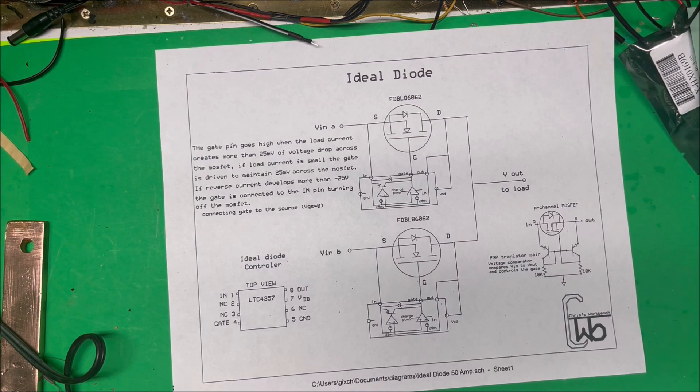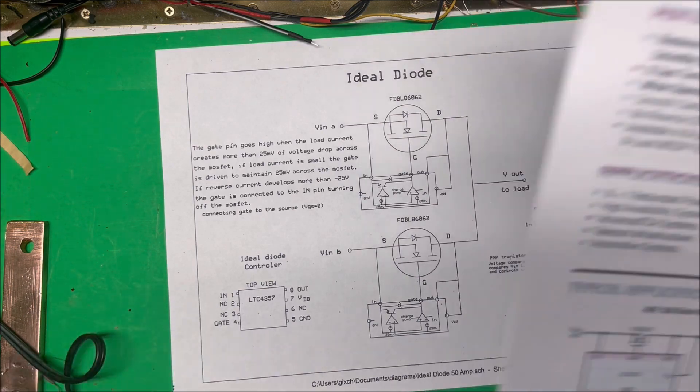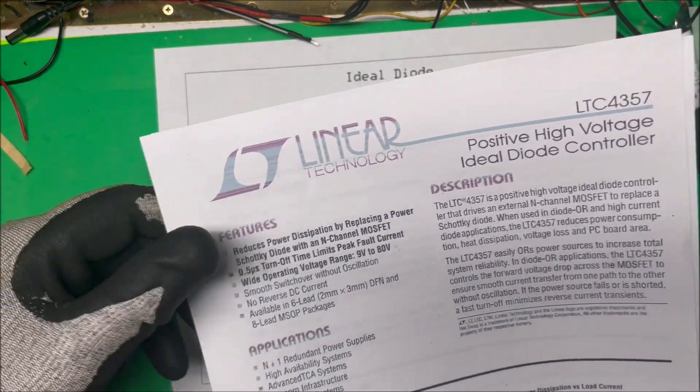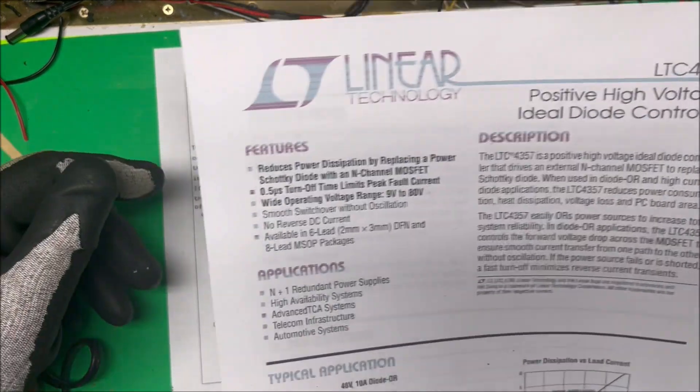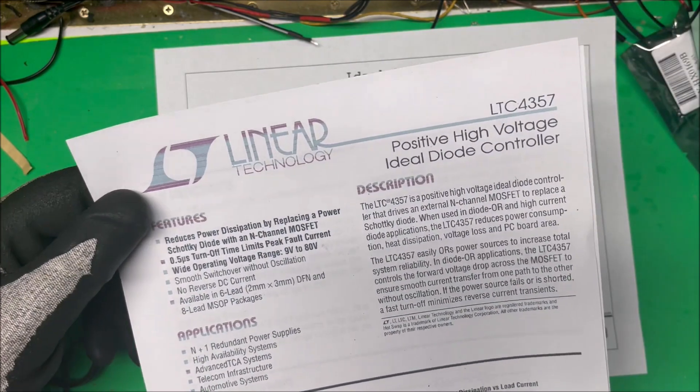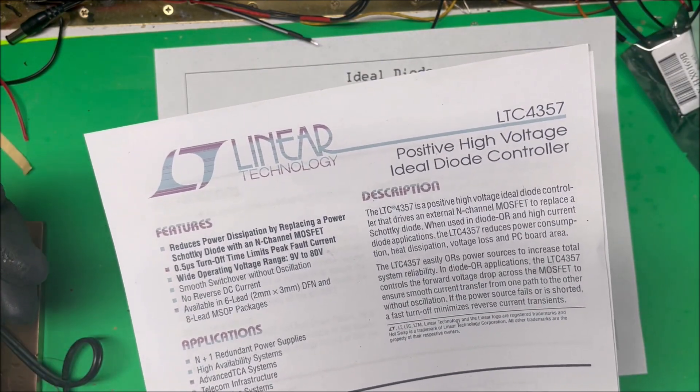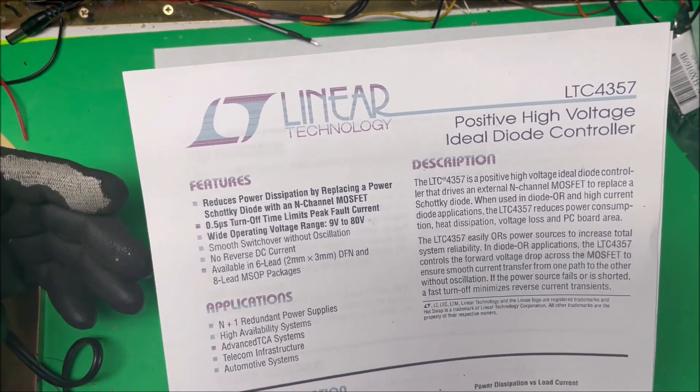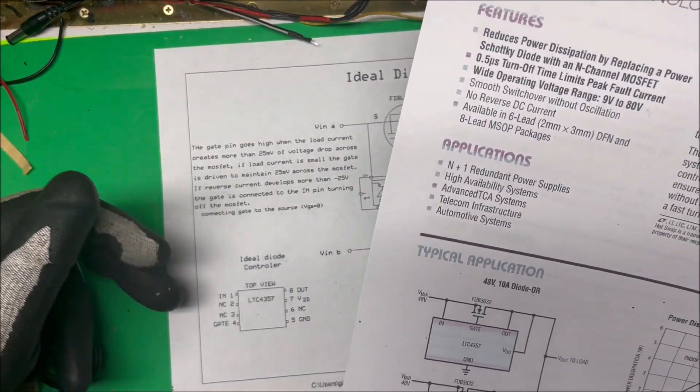There's a little chip on the unit which they scraped off the number on it, but what I think it is, is an ideal diode controller. I'm thinking it's the LTC 4357 and there's eight pins on it, but most of the pins, three of them, aren't being used on the unit itself.